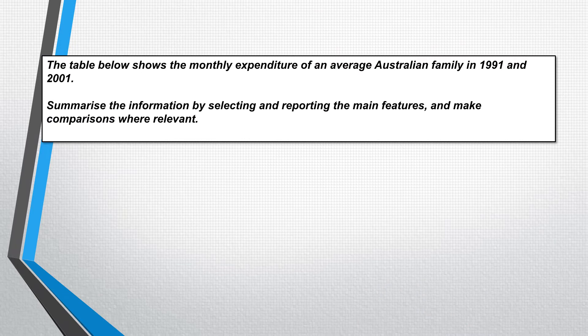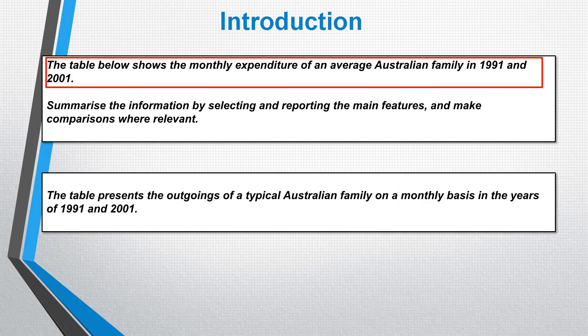First we need to write the opening introductory sentence. I've transformed the original opening statement to the following: 'The table presents the outgoings of a typical Australian family on a monthly basis in the years of 1991 and 2001.' Rather than 'below' I've put 'presents.' Rather than 'expenditure' I've used 'outgoings.' Rather than 'average' I've used 'typical.' And I've put 'monthly' in a different place in the sentence, just to vary it and show that I have good control of grammar. So that's the introductory sentence done, just by using direct synonyms.